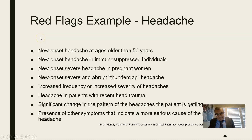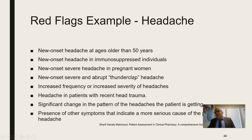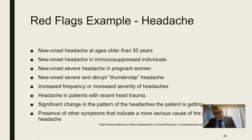Examples of red flags for headache include: new onset headache in a patient older than 50 years; new onset headache in immunosuppressed individuals; new onset severe headache in a pregnant woman; new onset severe and abrupt 'thunderclap' headache, which may indicate brain pathology such as subarachnoid hemorrhage or intracerebral hemorrhage or stroke; increased frequency or severity of headaches; headache in a patient with recent head trauma; significant change in the pattern of headaches; and the presence of other symptoms indicating a more serious cause.